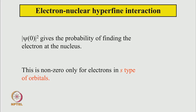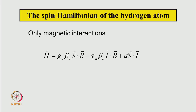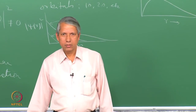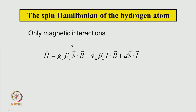|ψ(0)|² gives the probability of finding the electron at the nucleus and is nonzero only for electrons in s-type orbitals. The Hamiltonian dealing only with magnetic interactions — the electron Zeeman, nuclear Zeeman, and hyperfine interaction — is called the spin Hamiltonian. Notice that we do not include the kinetic energy of the constituent particles or the Coulomb potential energy. Only the interaction energies are included in the spin Hamiltonian.